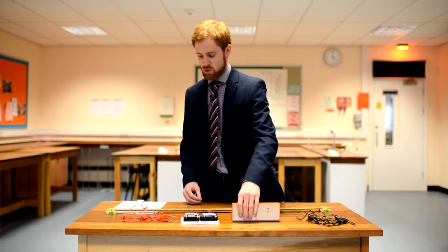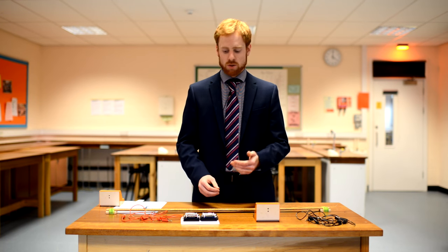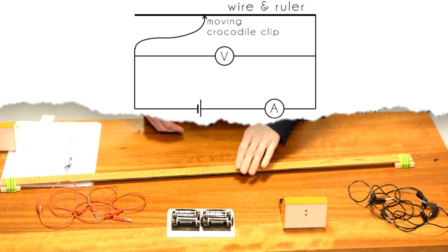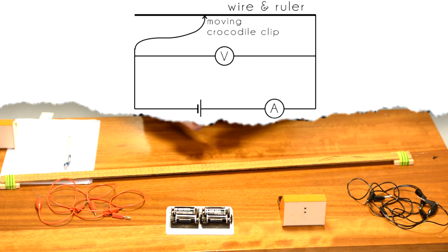So first off I'm going to put the voltmeter to one side and just build a series circuit with the battery, the ammeter and the resistance wire that we want to test.